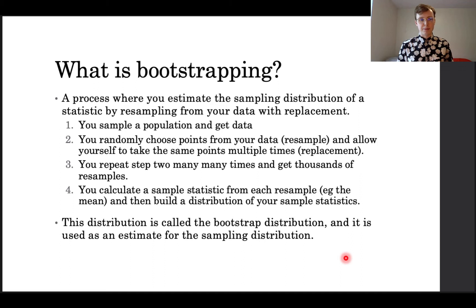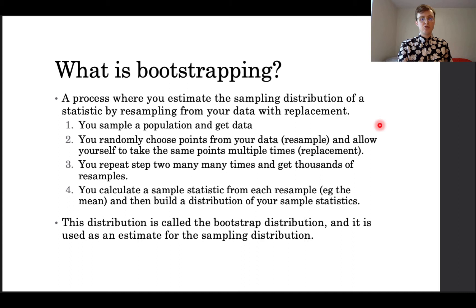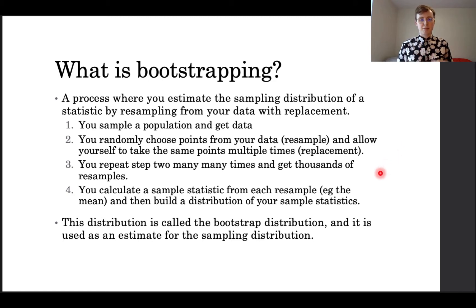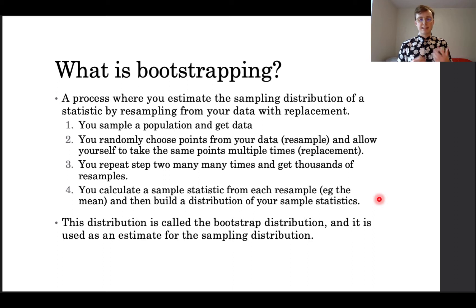So, what is bootstrapping? Bootstrapping is a process where you estimate the sampling distribution of a statistic by resampling from your data with replacement. First, you randomly sample a population and you get your data. Then, you randomly choose points from that data — this is the resampling — and allow yourself to take the same points multiple times. This is the replacement part. You repeat that resampling process many, many times and get thousands of resamples. You then calculate a sample statistic from each resample, for example the mean, and then build a distribution of your sample statistics. This distribution is called the bootstrap distribution, and it is used as an estimate for the sampling distribution.